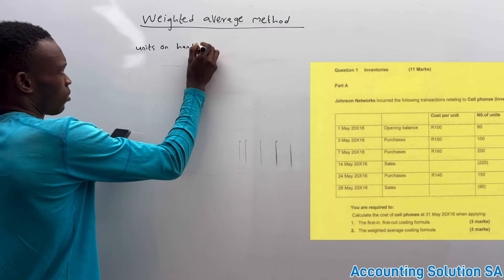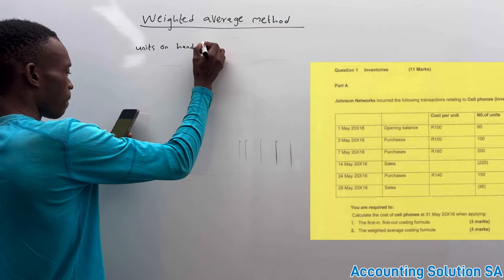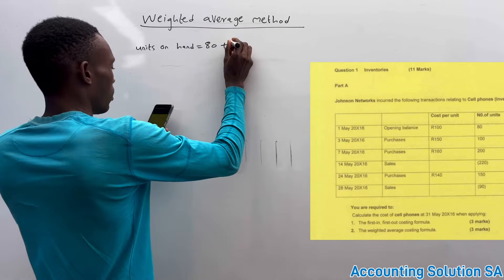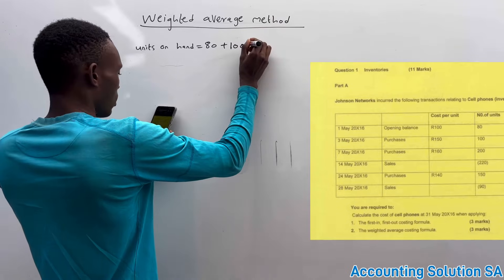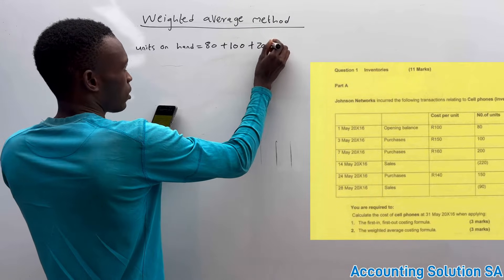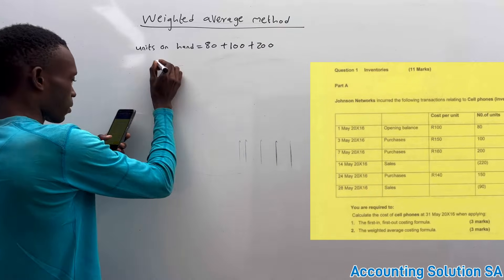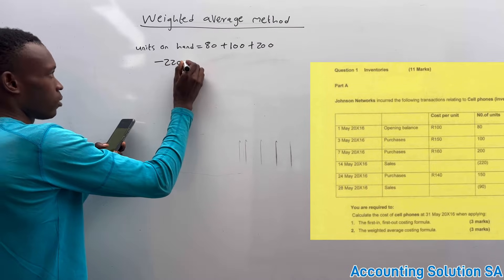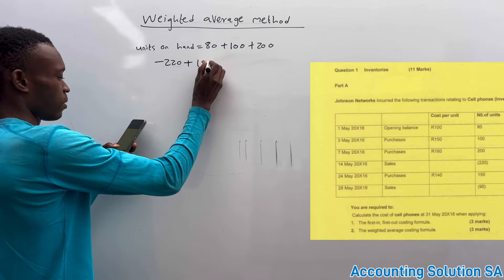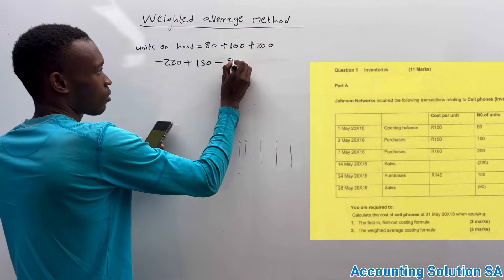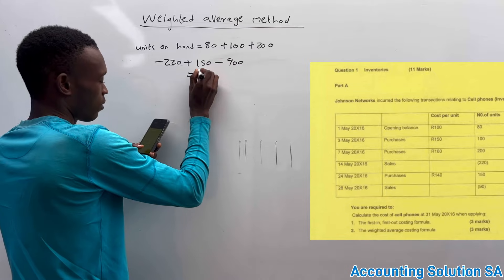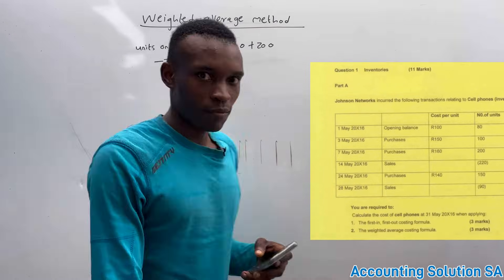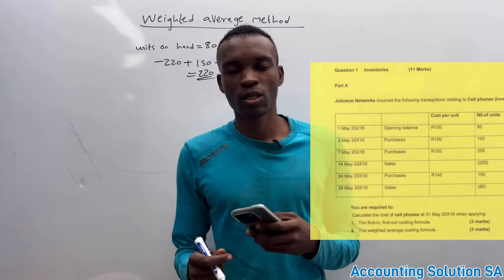At the beginning, we have 80 plus 100 of purchase plus another 200. Then after that, we need to subtract the one that has been sold and we add again the one that has been purchased and subtract another one that has been sold. It's gonna give us 220 units at the end.